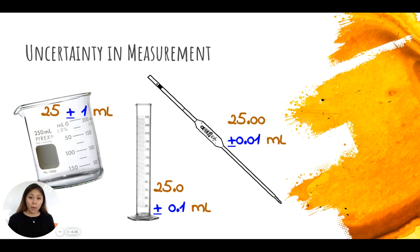Lastly, our volumetric pipette is accurate to 25.00 milliliters. So this means that our uncertainty would have to be at the hundredths place because this glassware is telling us that it's very accurate and very precise.